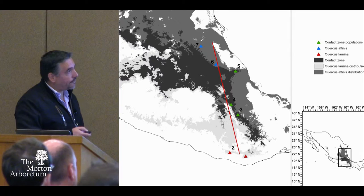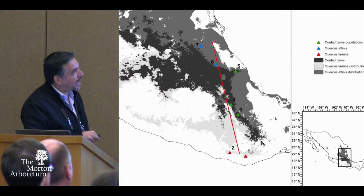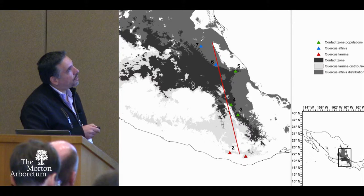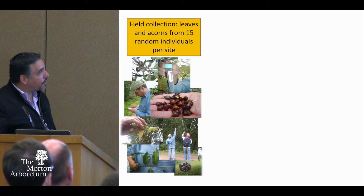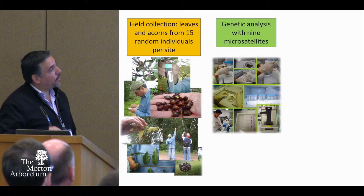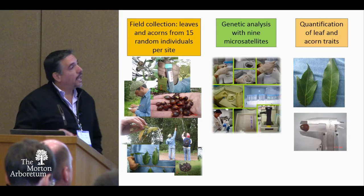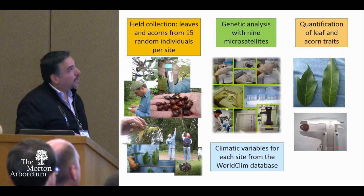We sampled across the hybrid zone, collecting from apparently pure Quercus laurina populations, some populations in the hybrid zone, and some Quercus affinis populations. Blue dots indicate affinis populations, green ones indicate contact zone populations, and red ones indicate Quercus laurina populations. We went to the field and collected leaves and acorns from 15 individuals per site randomly — we weren't looking for hybrids or pure parentals. Back in the lab, we did all the genetic analysis with nine nuclear microsatellites, quantified several leaf and acorn traits, and obtained climatic variables for each site from the WorldClim database.